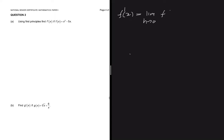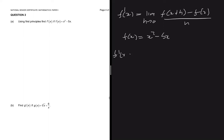So the first question says using first principle. Let me write what first principle says: f prime of x equals to the limit as h approaching 0 of f(x plus h) minus f(x) divided by h. That's what first principle essentially says. So we're supposed to find using first principle f prime of x, where f of x equals to x squared minus 5x.